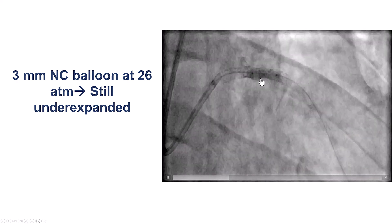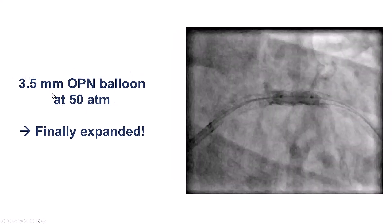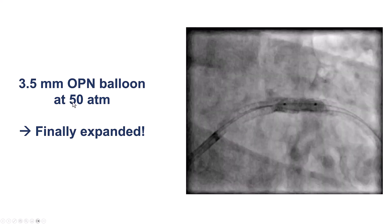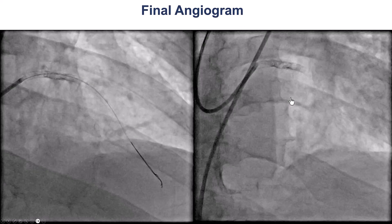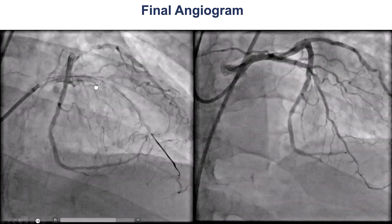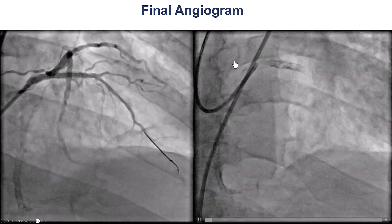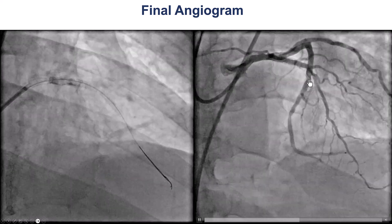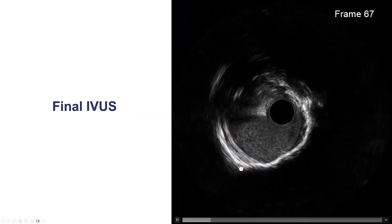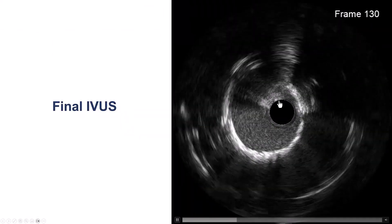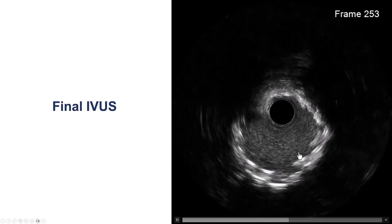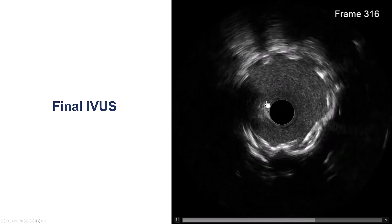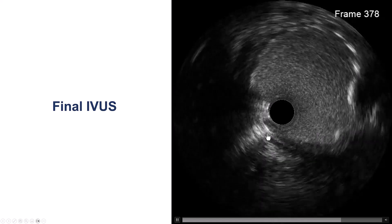It was better, but not fully expanded with the balloon. So we then used a 3.5 mm OPN balloon at 50 atmospheres, and this time the stent successfully expanded. This is seen angiographically — we have a nice result with good flow into the LAD and nice expansion. This was also confirmed by intravascular ultrasound. We no longer have the napkin ring appearance in the proximal LAD; we now have a much bigger lumen in the proximal LAD.